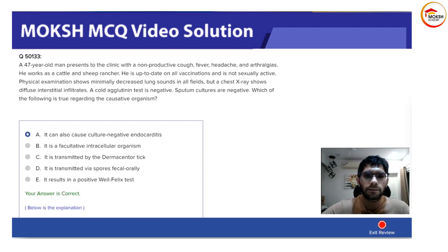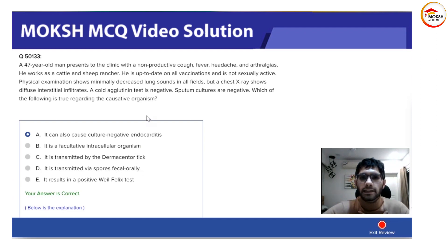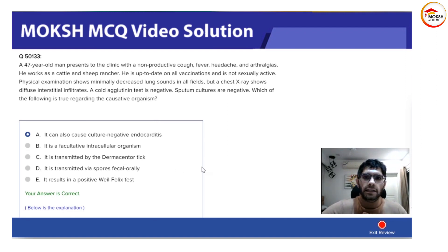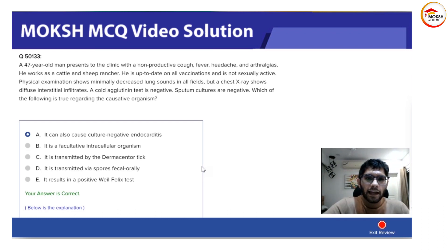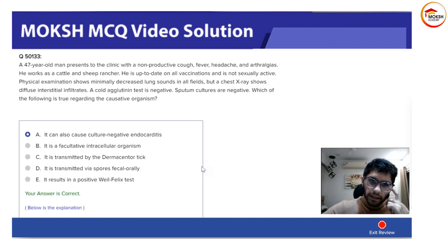Coxiella burnetii is transmitted by spores, but it is not transmitted fecal-orally — it is transmitted by inhalation. The spores are present in the litter of cows. When the litter dries and wind blows, the farmer in the vicinity inhales the spores, which then cause interstitial pneumonia.